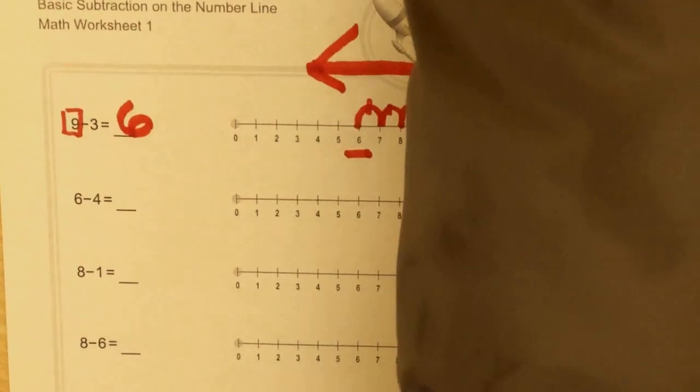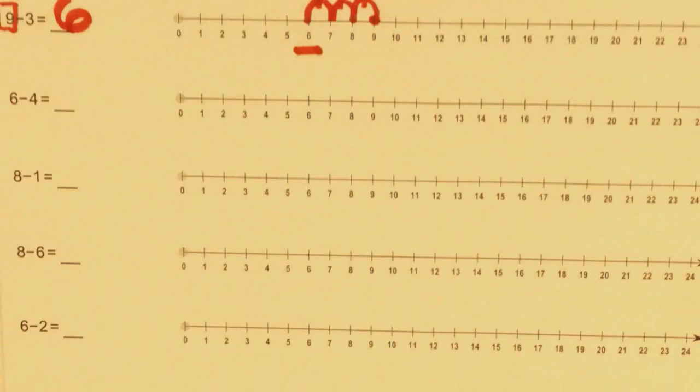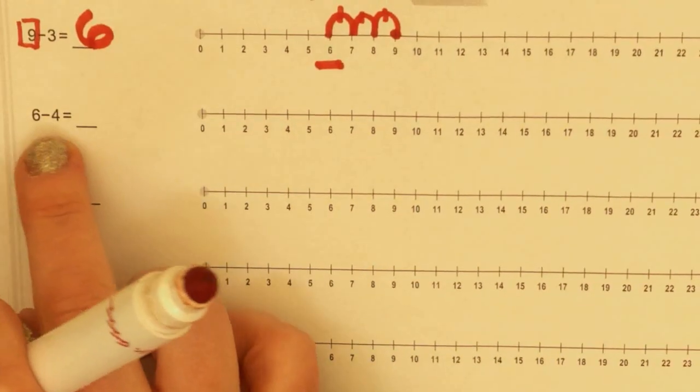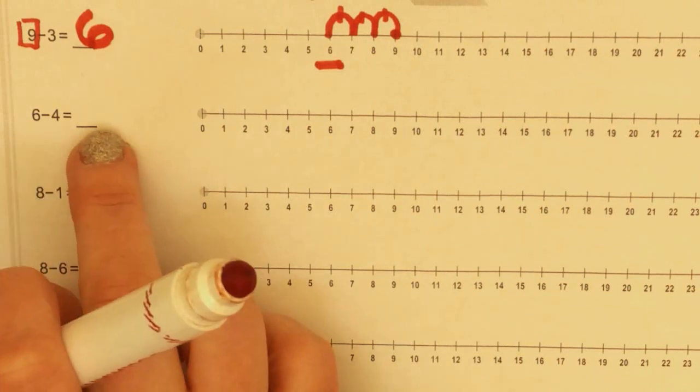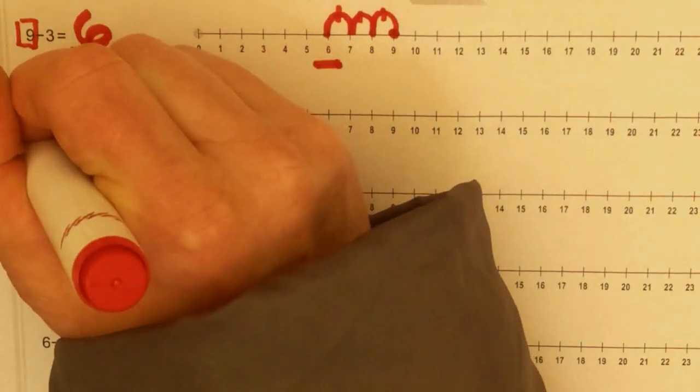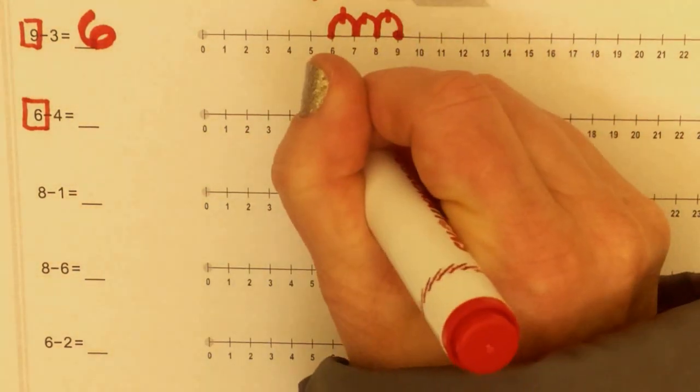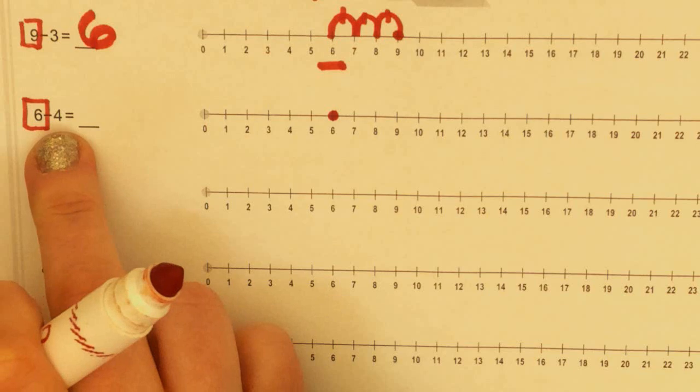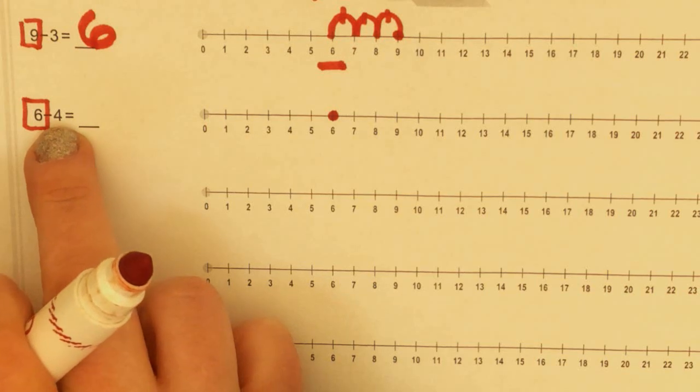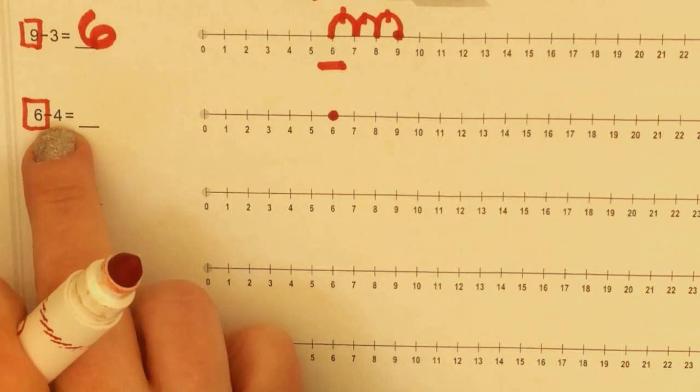Alright, let's look at the next one, see if I can make it even bigger. Here we have 6 minus 4 equals something. 6 is my start number. So let's go draw a number on 6—I'm sorry, a dot on 6. 4 is my hop number. Let's go draw 4 hops going down the number line.